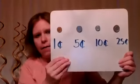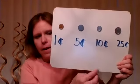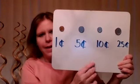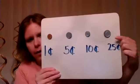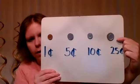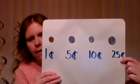Then we have the dime. A dime is worth ten cents. Let's take a look at the dime up close — it's worth ten cents. And we have the quarter. A quarter is worth twenty-five cents. Here is the quarter up close.